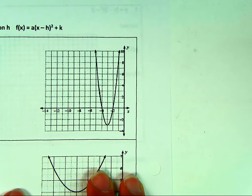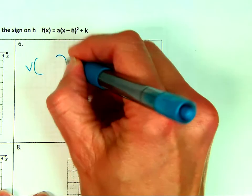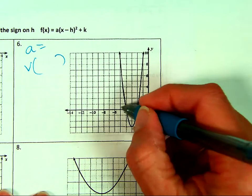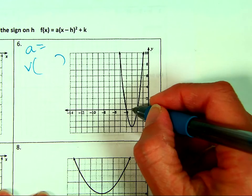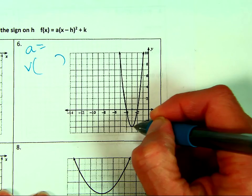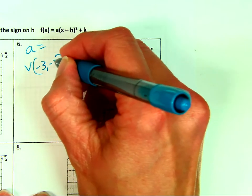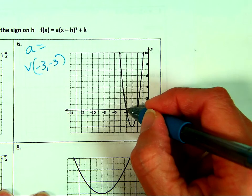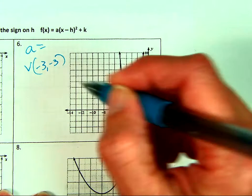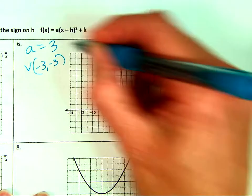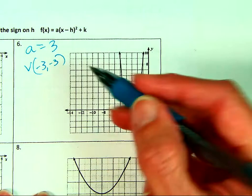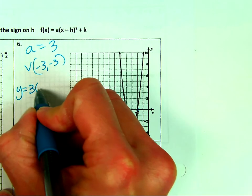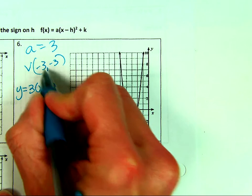Next parabola: I need my vertex and my A. The vertex looks like (−3, −3). And A — going over 1, up 1, 2, 3 — looks like 3. So A is 3, it opens up so it's positive. Y = 3(x + 3)² − 3. It's always the opposite sign in the parentheses.